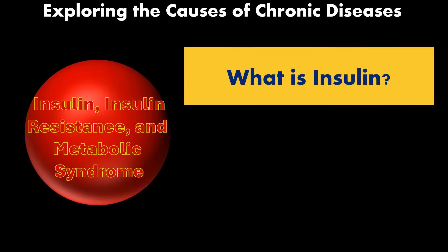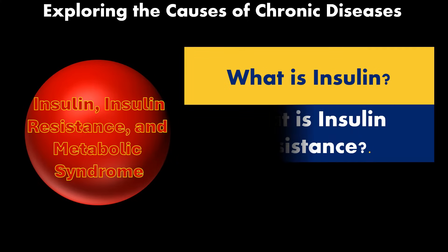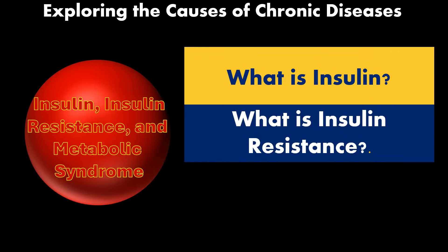Insulin helps glucose to enter the cell for use as energy. So what is insulin resistance? Over time, due to bad nutritional behaviors, insulin levels are persistently elevated, and because of that, insulin resistance gradually starts occurring. It starts when the cells in the body become less responsive to insulin, leading to elevated blood sugar and insulin levels, and this can surely cause a cascade of metabolic disturbances.